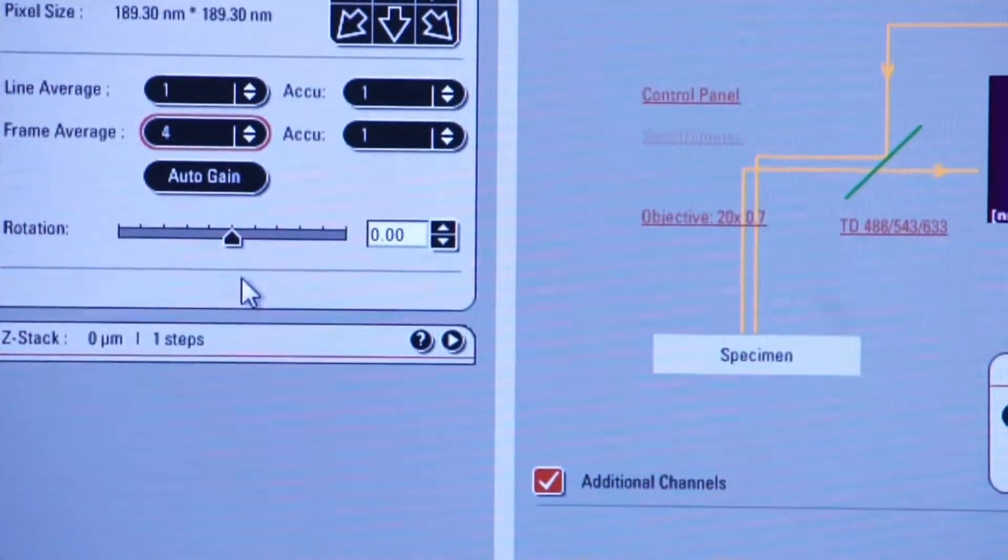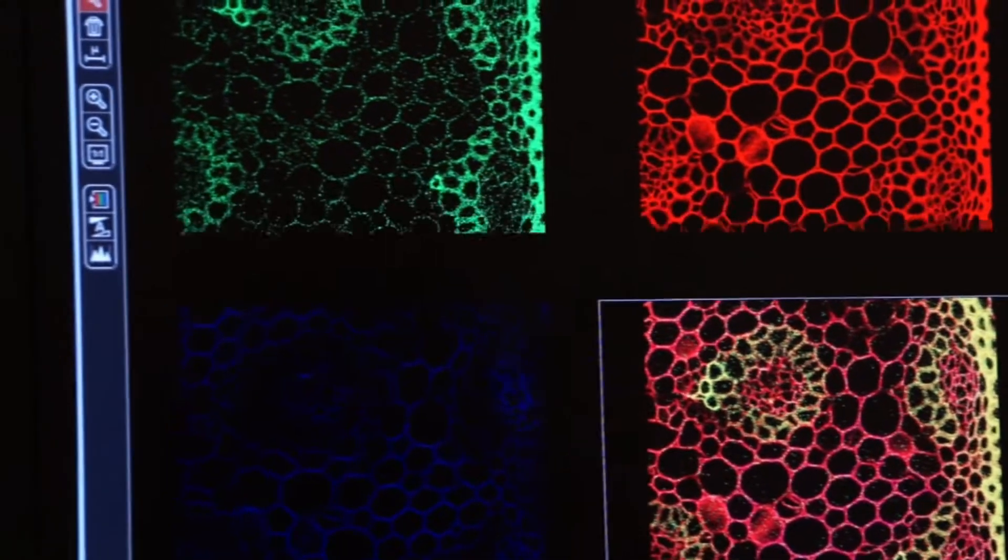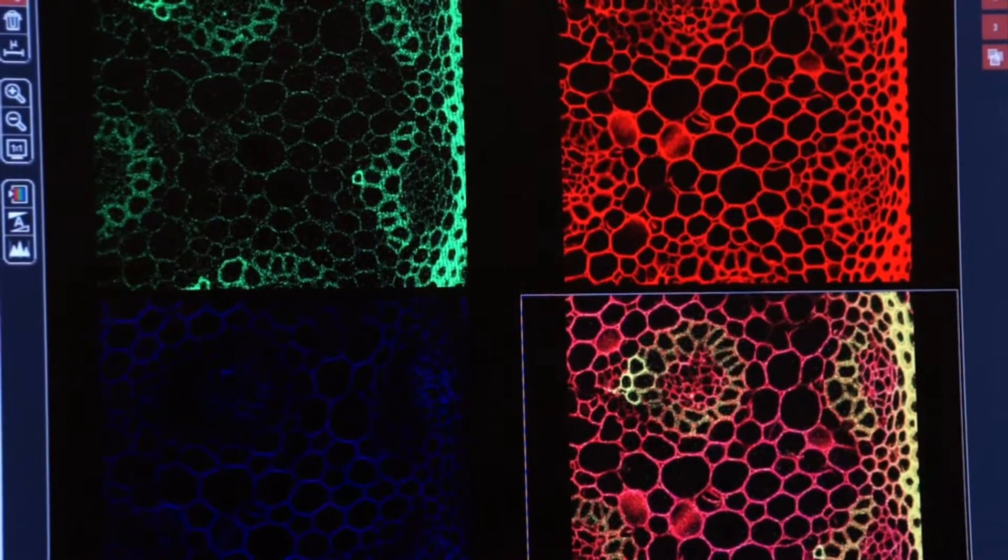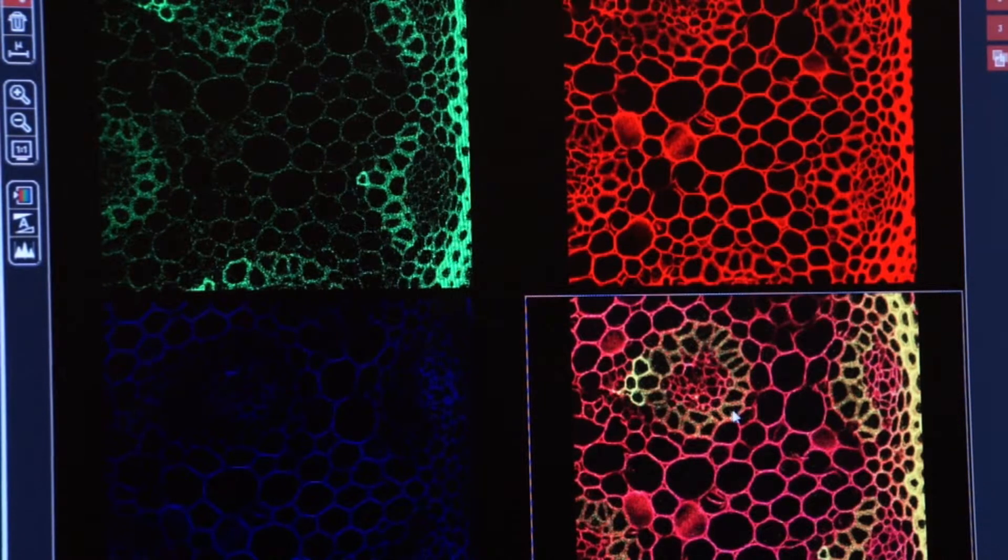Now we're going to click on capture image and watch the image on the right screen. This is a little faster. Again, frame averaging is always faster than line averaging, but it doesn't return as nice a result.